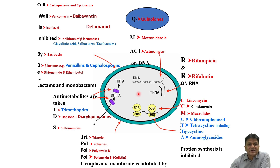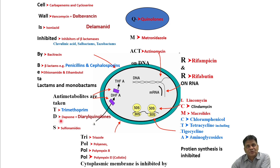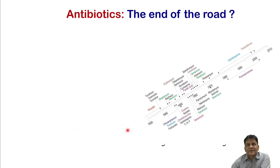Certain antibiotics interfere with the metabolic process by inhibiting subunits necessary for cell wall synthesis — these are called antimetabolites. T is for trimethoprim, a component of Septrin or cotrimoxazole; D is dapsone, used for the treatment of leprosy; and there are new additions including direct inhibitors, and then sulfonamides.